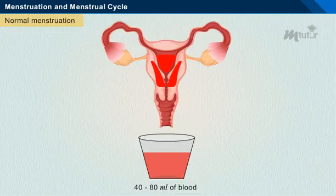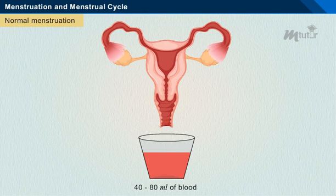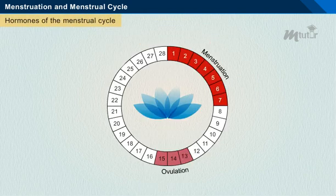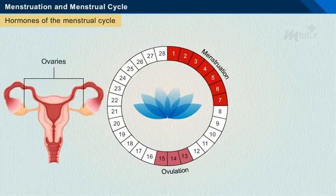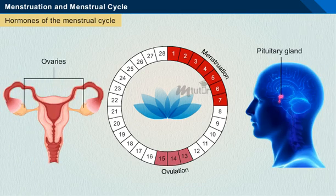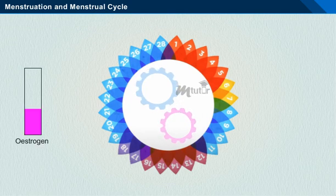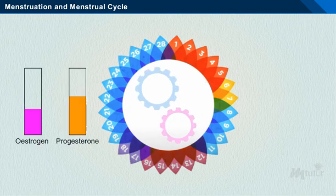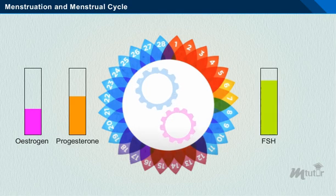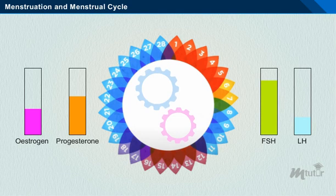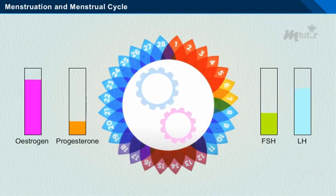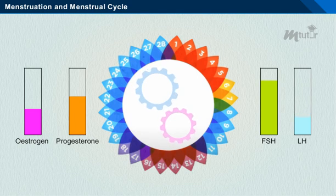This can vary between women and from one cycle to the next. During normal menstruation, nearly 40 to 80 milliliters of blood is lost from a female body. Hormones of the menstrual cycle are produced by the ovaries and anterior pituitary. Each menstrual phase is influenced by oestrogen, progesterone, follicle-stimulating hormone (FSH), and luteinizing hormone (LH). The variation in the level of each of these hormones decides the menstrual phase which a girl undergoes.